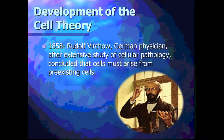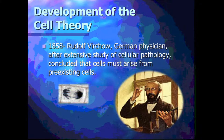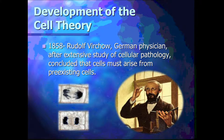Virchow is the next scientist. He came up with the idea that all cells must come from pre-existing cells. Looking at the process shown here — this is mitosis, the process where one cell creates another cell. To help you remember Virchow, think: cows have to come from cows, so cells come from cells. Virchow said all cells have to come from a pre-existing cell — it's kind of like asking what came first, the chicken or the egg.